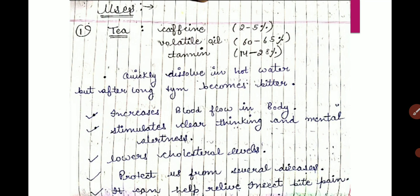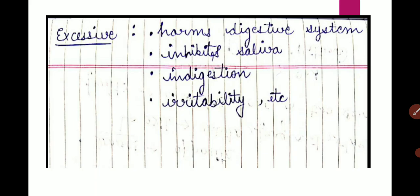Tea increases blood flow in the body, stimulates clear thinking and mental alertness, and lowers cholesterol level. It protects us from several diseases and can help relieve insect bite pain. However, excessive tea can harm the digestive system, inhibit saliva, cause indigestion, irritability, and over-excitability of the central nervous system.